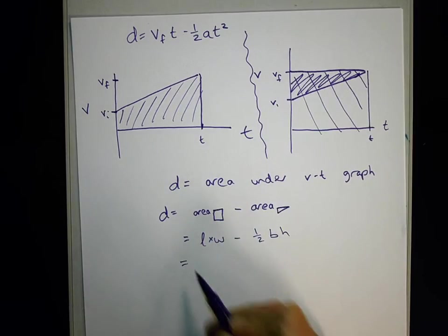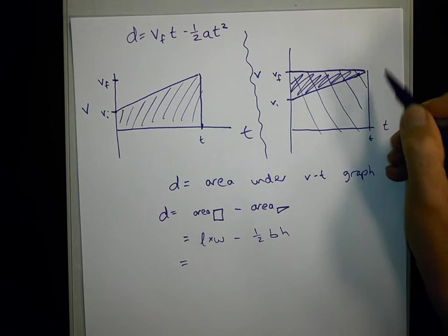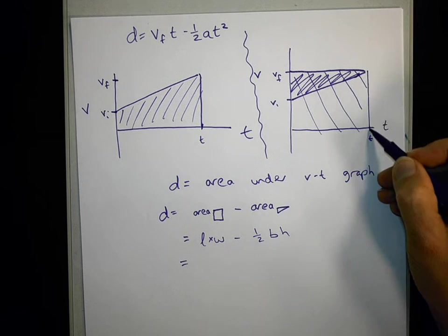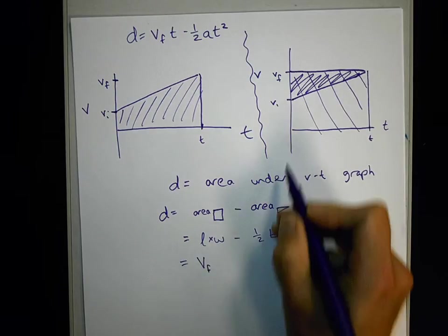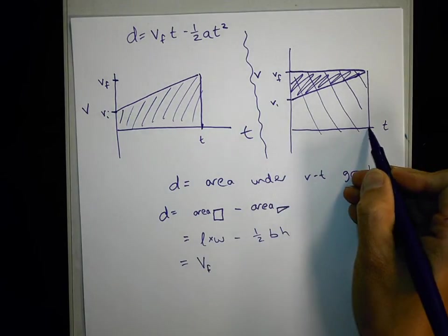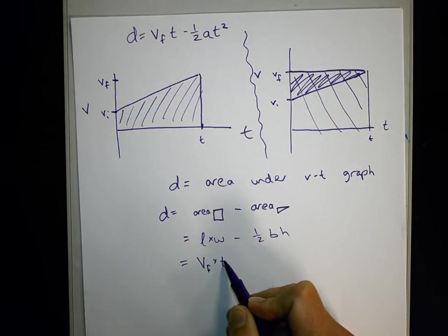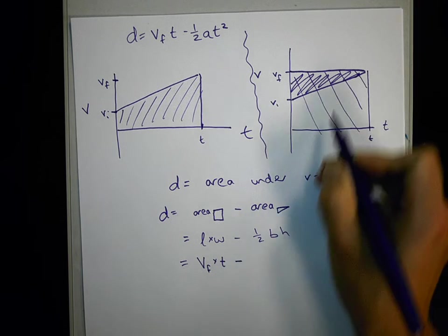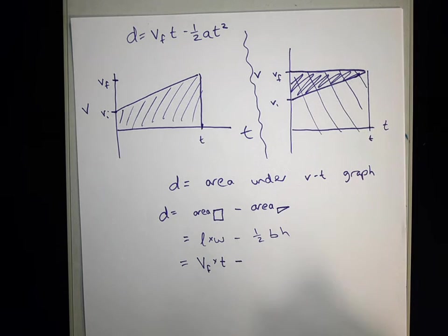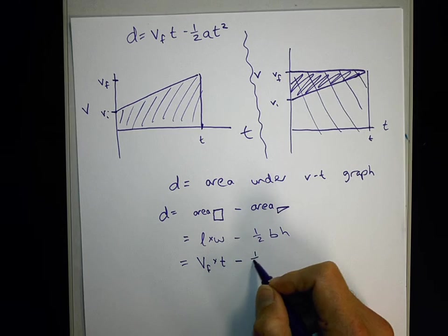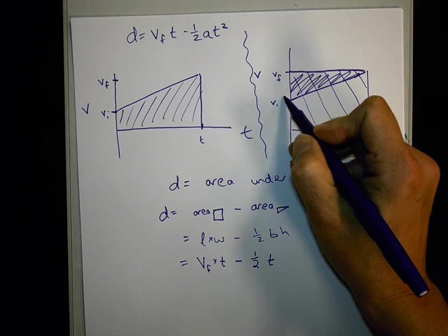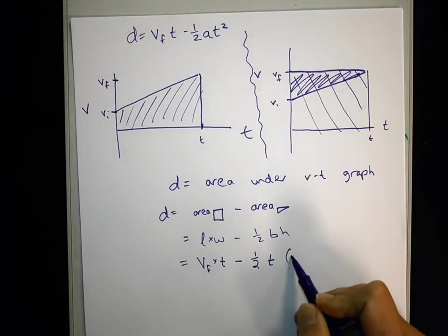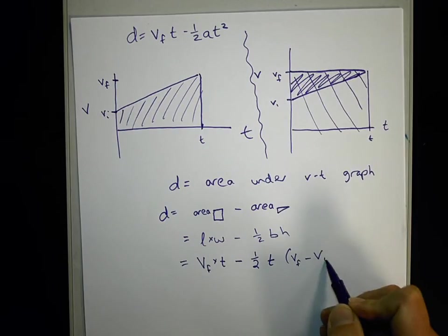So we just do that in terms of our givens. This is, let's call this the length of that big rectangle, that would be like VF. Let's call this the width of that big rectangle, that would be T. And I have to subtract the area of this triangle, a half times base times height. A half base is T. Height is this difference here for this triangle, that would be VF minus VI.